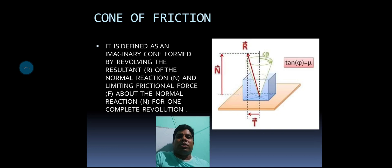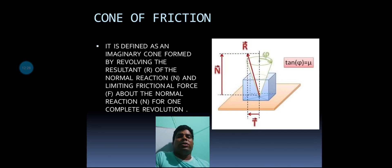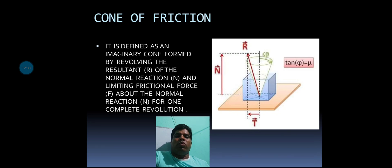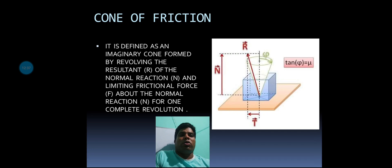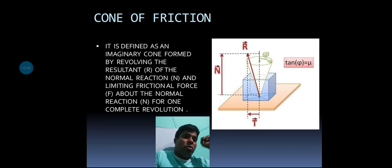The cone of friction is defined as an imaginary cone formed by the resultant of the normal reaction N and the limiting frictional force F about the normal reaction N for one complete revolution. Therefore, mu equals tan phi.